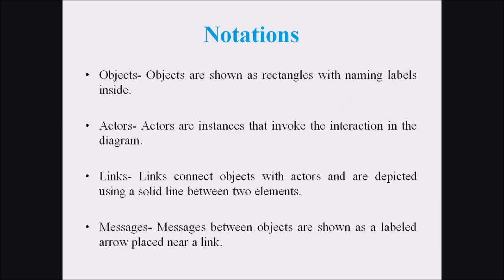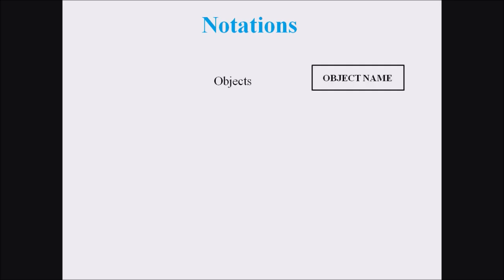The different notations associated with collaboration diagrams include object, actors, link, and messages. Objects are shown as rectangles with naming labels inside. Actors are instances that invoke the interaction in the diagram. Links connect the objects with the actors and are depicted using a solid line between two elements. Messages between objects are shown as labeled arrows placed near a link.